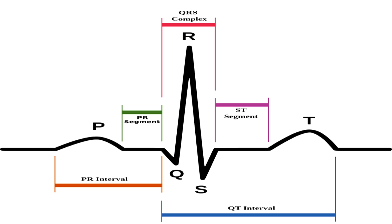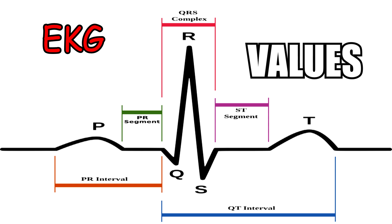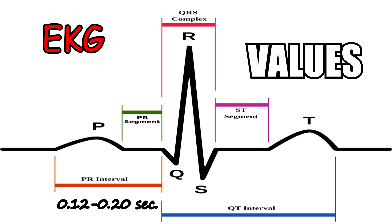The first step is to memorize what the PR interval is. The normal PR interval is between 0.12 to 0.20 seconds, and this is when the atrium is depolarizing. Then we have the QRS interval, which has to be less than 0.10 seconds — this is the ventricle depolarizing. And then we have the QT interval, where a normal interval is less than 0.40 seconds, and this is the ventricle repolarizing.